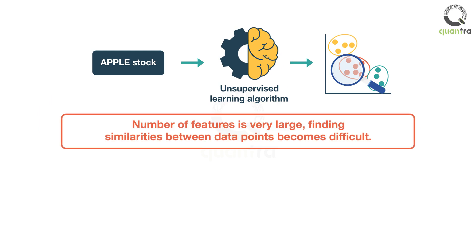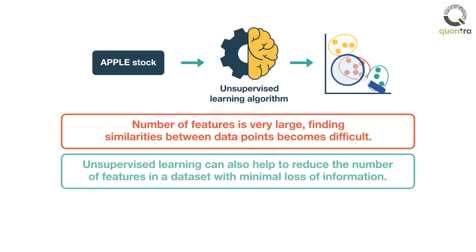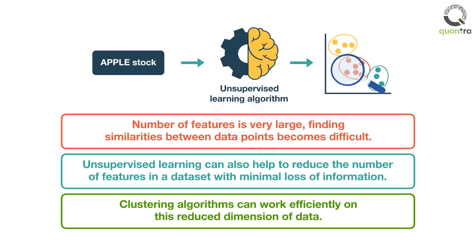If the number of features is very large, finding similarities between data points becomes difficult. Unsupervised learning can also help to reduce the number of features in a dataset with minimal loss of information, and the clustering algorithms can then work efficiently on this reduced dimension of data.